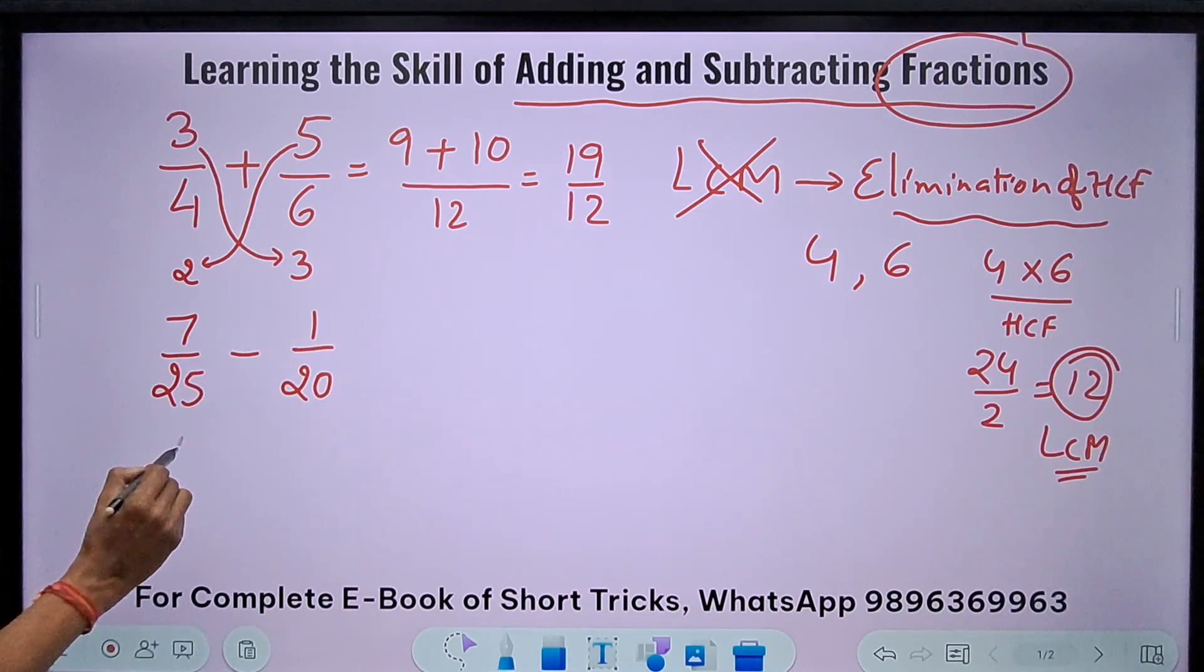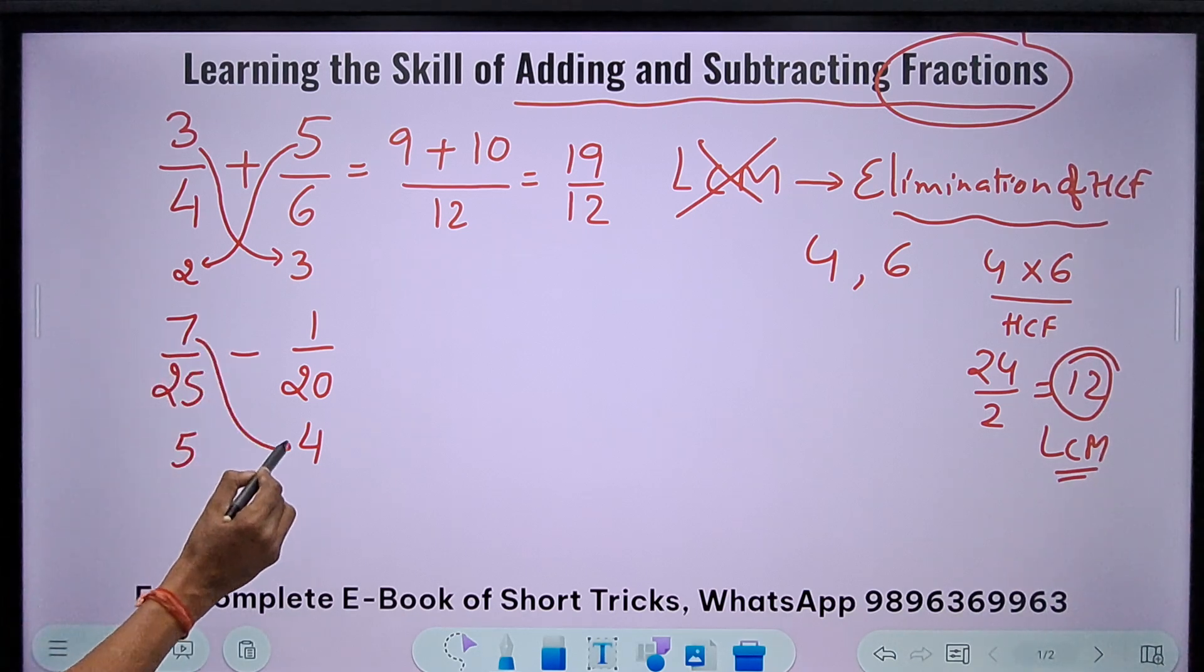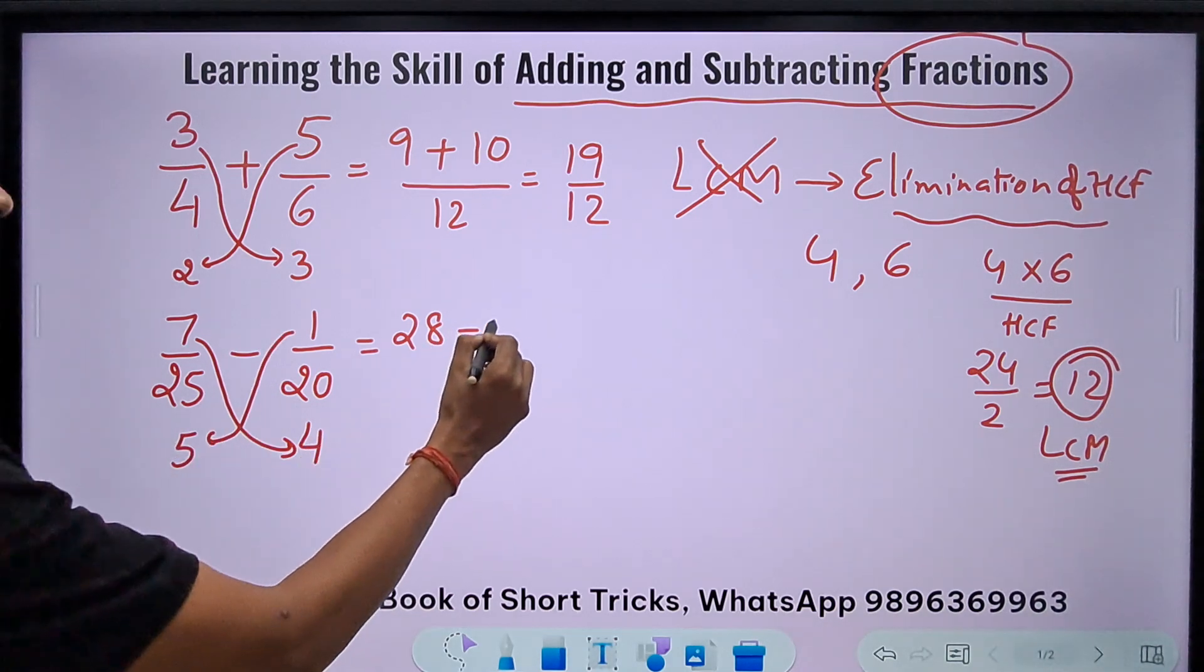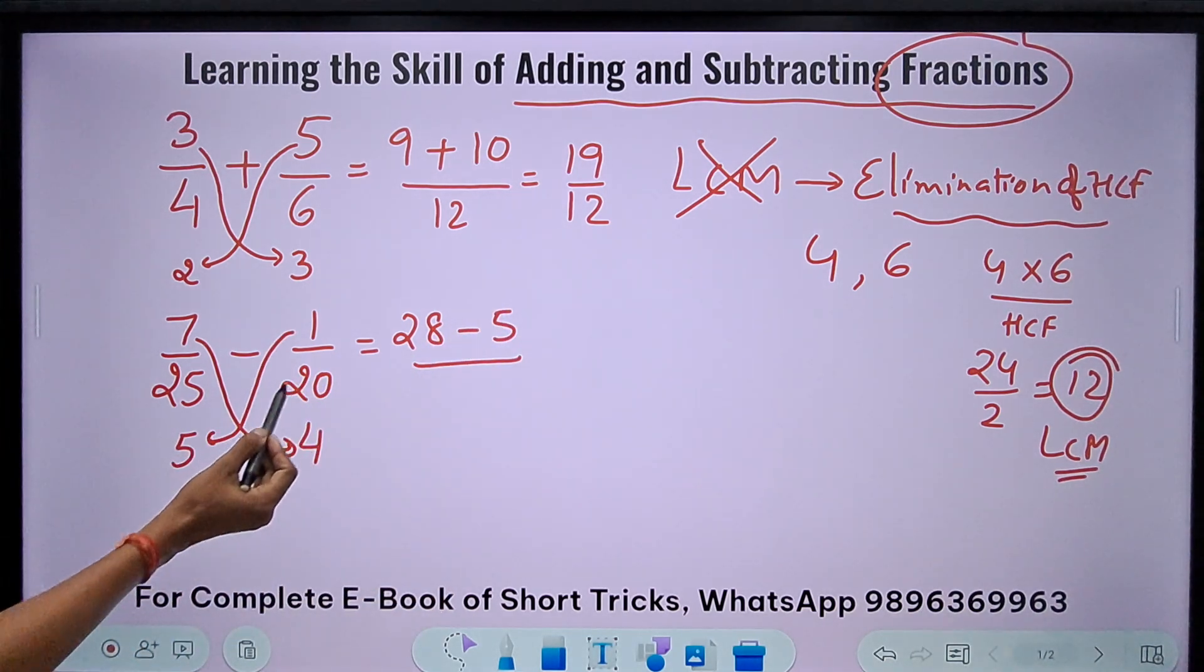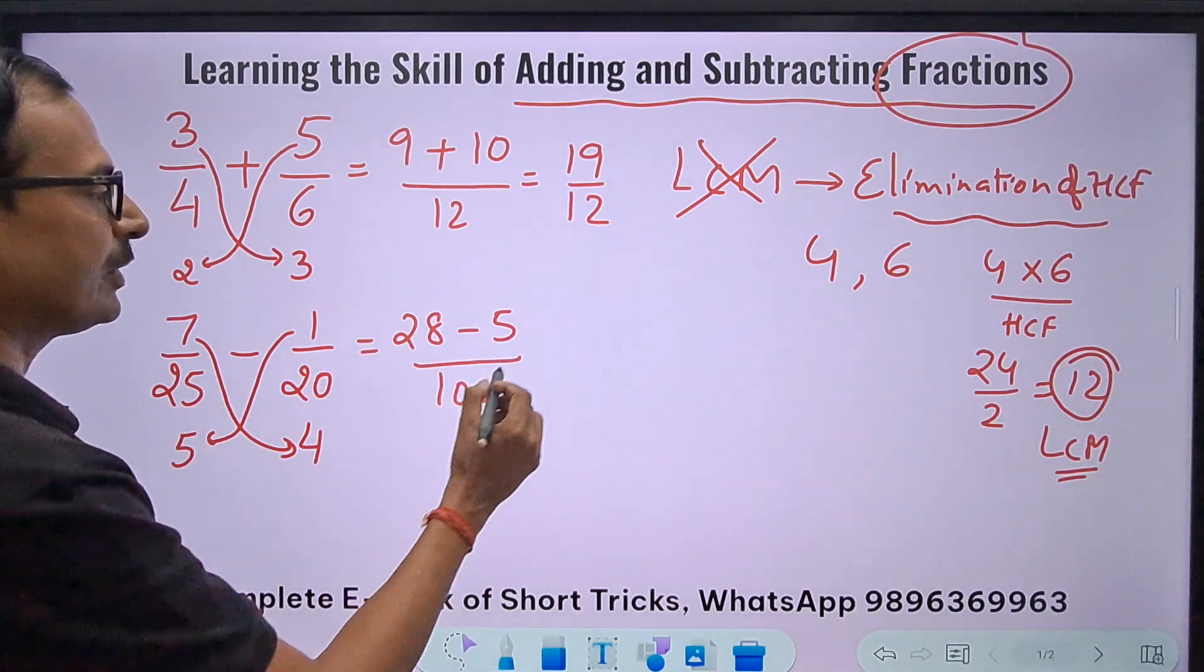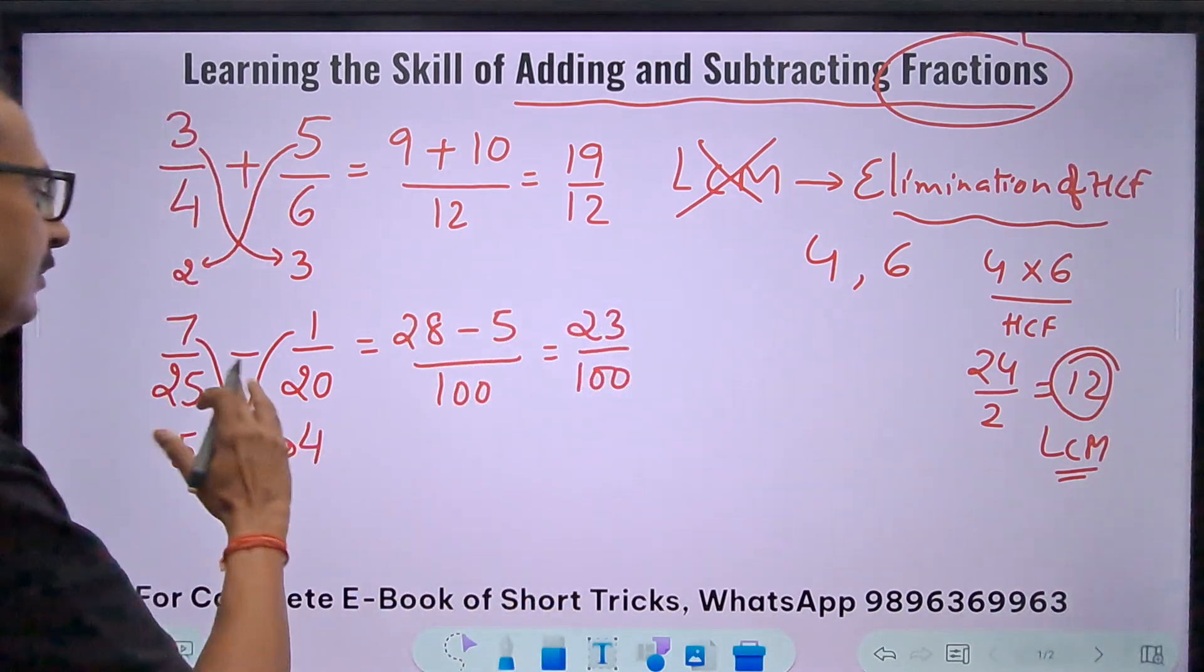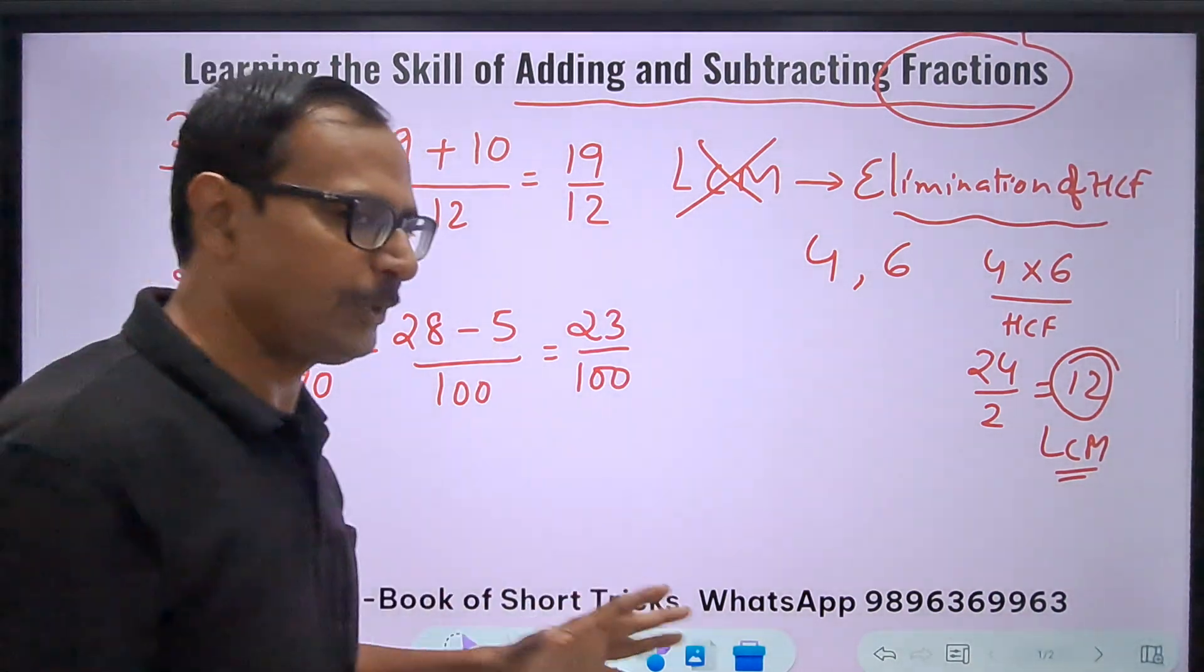So what will I do? The highest common factor of 25 and 20 obviously is 5. They are divisible by 5. So 5 times 5 is 25, 5 times 4 is 20. So I will do 7 times 4, which is 28. Because I am subtracting, there is a minus sign. 1 times 5 is 5. And in the denominator, what did I tell you? Either do 20 times 5 or do 25 times 4, and you have your answer: 28 minus 5 is 23/100 is the difference. Feeling better?